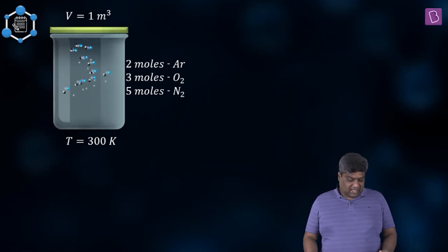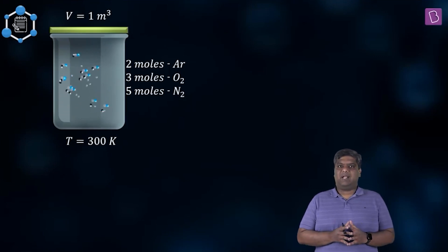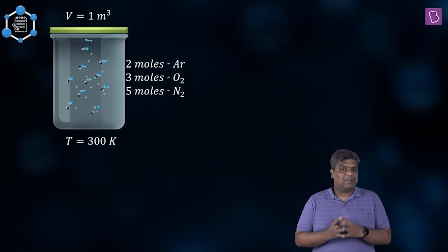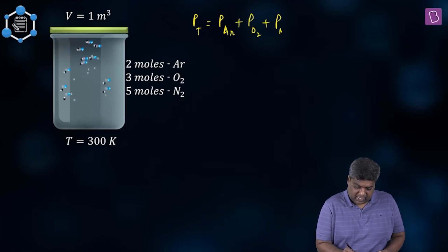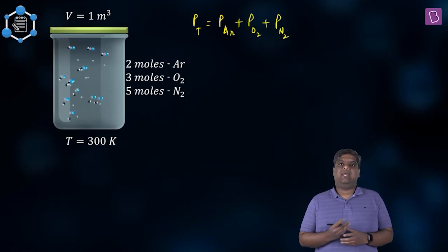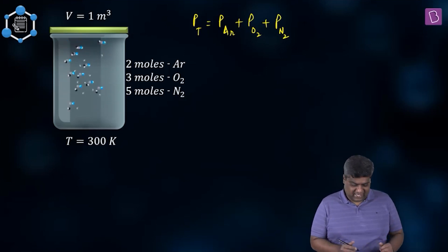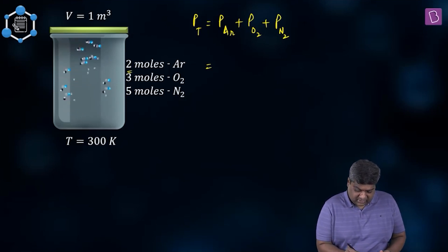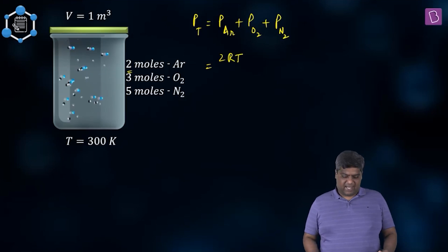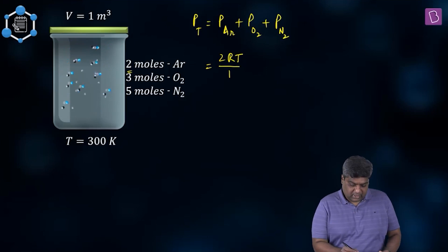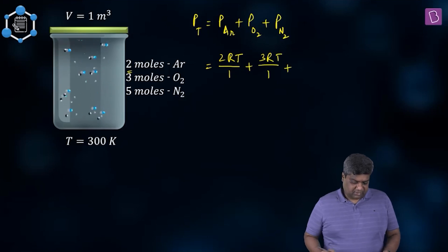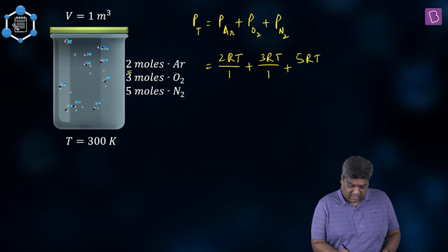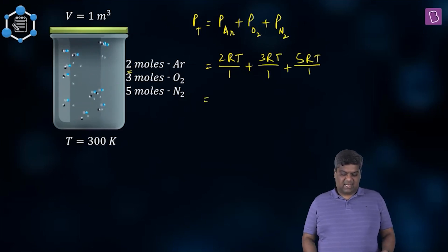We have two moles of Ar, three moles of O₂, and five moles of N₂, all at 300 kelvin and occupying one meter cube. The total pressure equals pressure due to Ar plus pressure due to O₂ plus pressure due to N₂. Since P = nRT/V, for Ar: 2RT/1, for O₂: 3RT/1, and for N₂: 5RT/1.